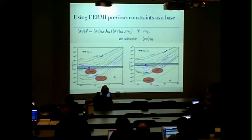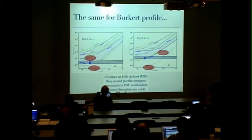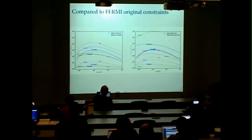We did the same thing for the Burkert profile and in this case the constraints are also stronger but not as much as with the NFW, which was expected of course.